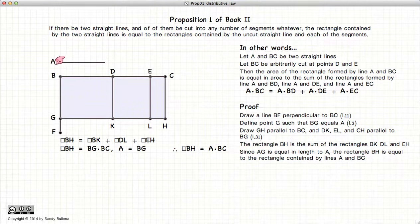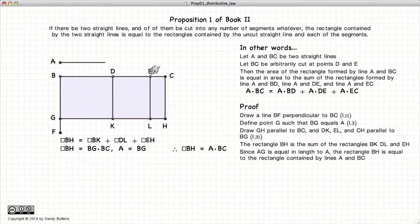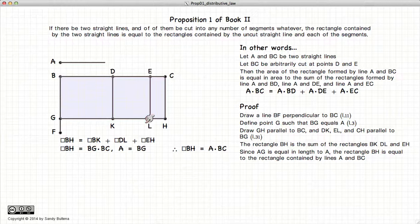So in other words, A times BC is equal to the area of BH. So we have that BH is equal to BK plus DL plus EH, which is equal to A times the line segment BC.